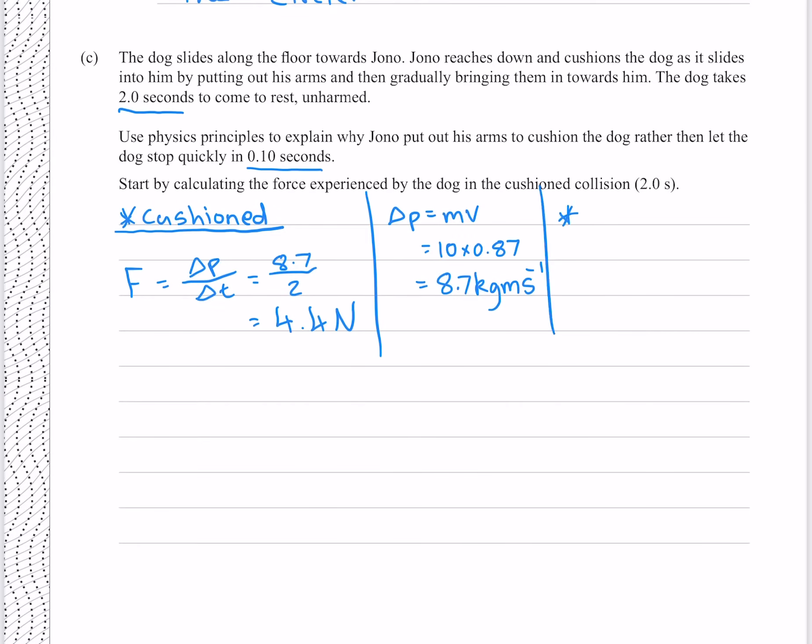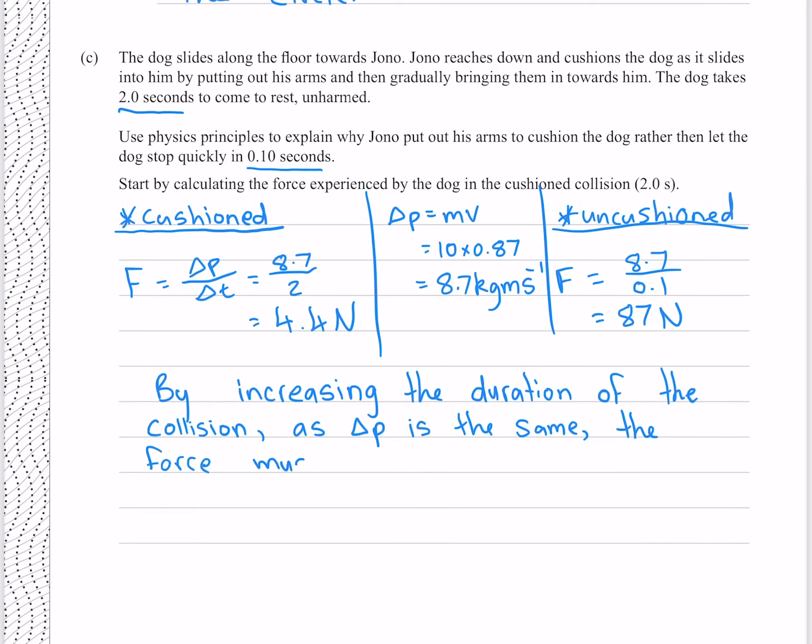For our uncushioned example, we do the same equation with the same change in momentum of 8.7, except now our duration is 0.1, which gives us 87 newtons. And so by increasing the duration of the collision, as the change in momentum is the same, the force must be less.